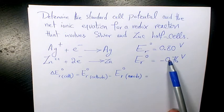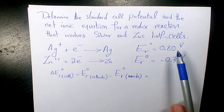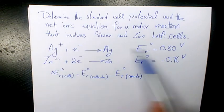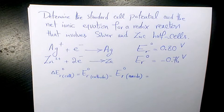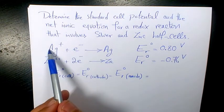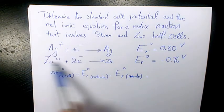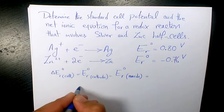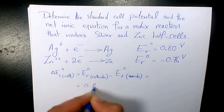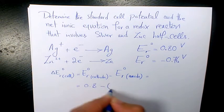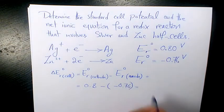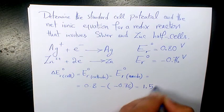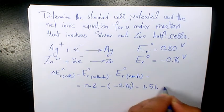Whoever has the larger number is going to be the stronger oxidizing agent. So comparing these two, the first one, silver, is going to be the stronger oxidizing agent. So the cathode is going to be silver and anode is going to be zinc. So it's going to be 0.8 minus negative 0.76, that's going to give me 1.56 volts.